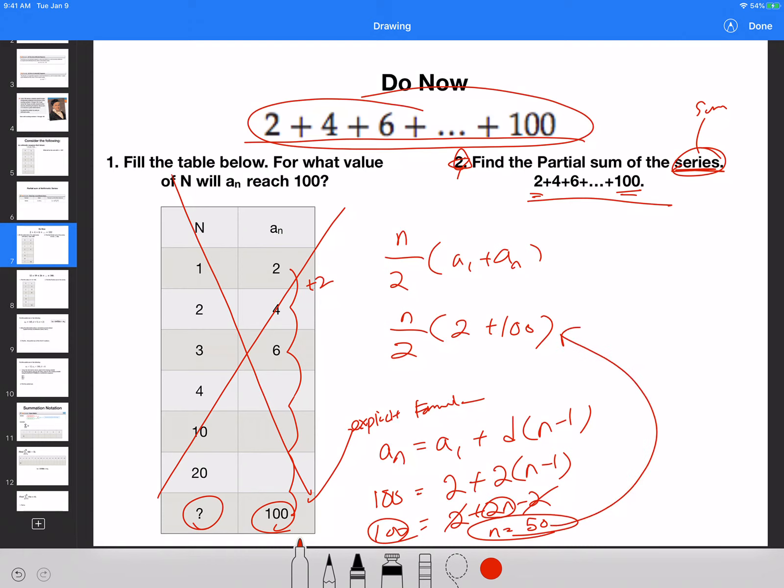So now that I can plug it in here: 25 times 2 plus 100, because 50 divided by 2, and so that's going to be 102 times 25, which I should use my calculator for. 102 times 25 gives me the final answer to be 2,550. That is going to be my series for these numbers.